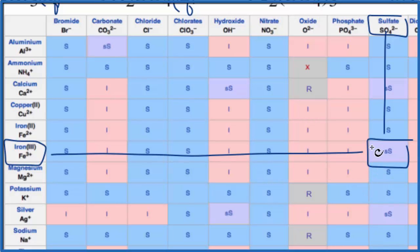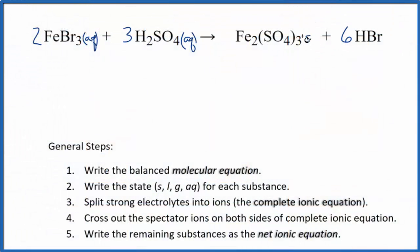When we're writing net ionic equations, we consider SS to be a solid, to be insoluble. So we'll put our S up here, and then HBr is a strong acid that's going to be aqueous.